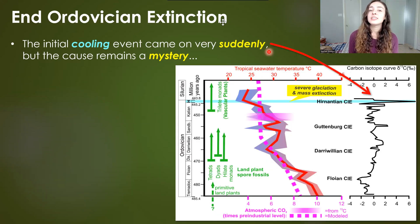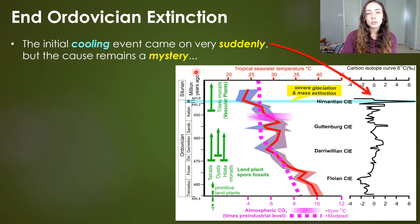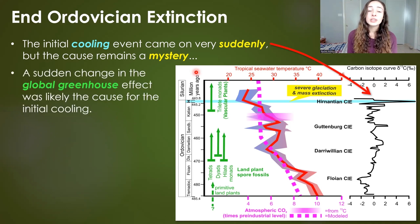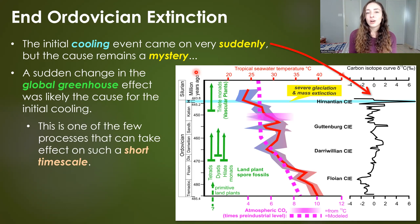The initial cooling event, the first pulse of climate change, came on really suddenly, as we can see with this really sharp peak at the time of this event. The cause of this is still a mystery, but we have some ideas. We think that a sudden change in the global greenhouse effect was likely the cause for the initial cooling, because this is one of the few processes that can cause global change on such a short timescale.